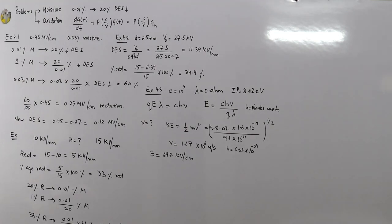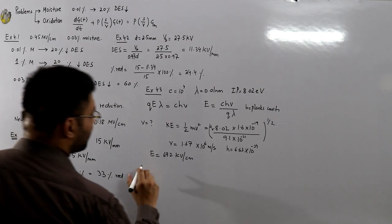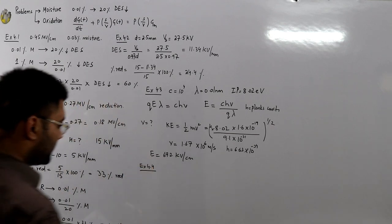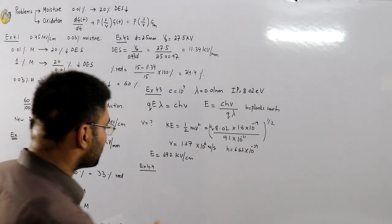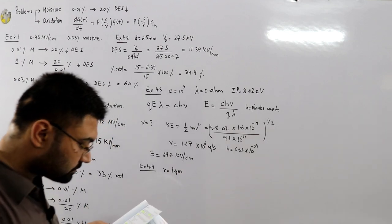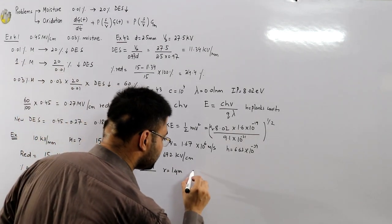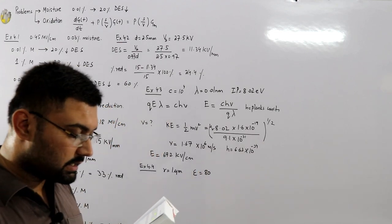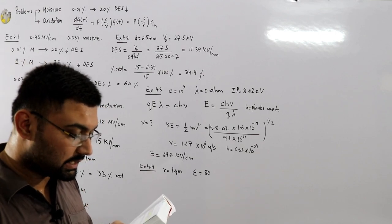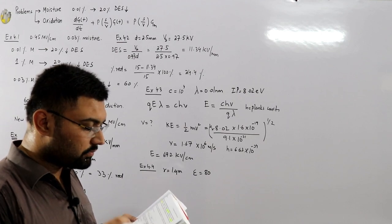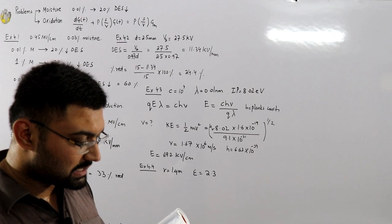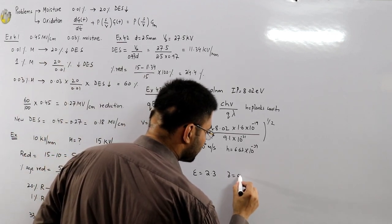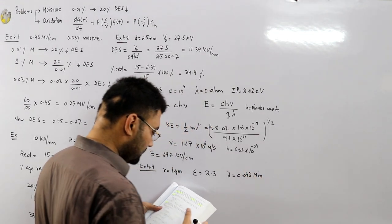Example 4.4: find the critical value of electric field to cause breakdown in the presence of a spherical air bubble of radius 1 micrometer, having a permittivity of 80, in insulation oil having a permittivity of 2.3. Assume surface tension to be 0.043 Newton per meter.